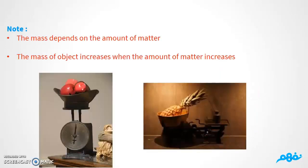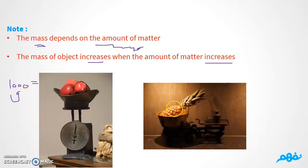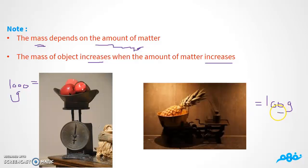Note number one: the mass depends on the amount of matter. The mass of the object increases when the amount of matter increases. For example, in picture one we have three apples equal to one thousand grams, and in picture two we have only one pineapple equal to one hundred grams. We have less mass because we have less amount of the object, and more mass because we have more amount of the object.